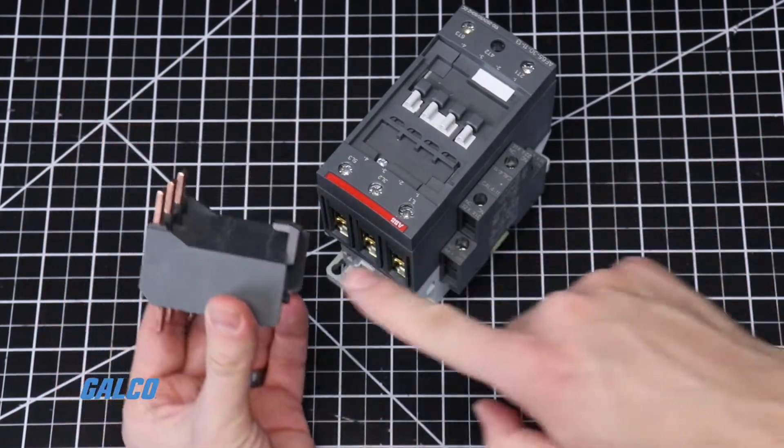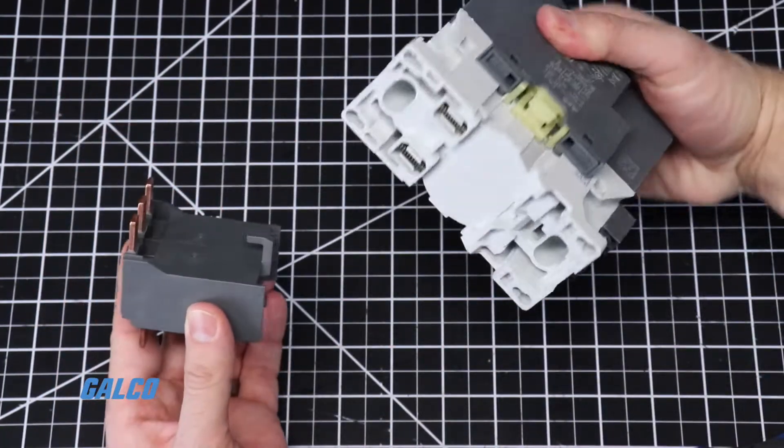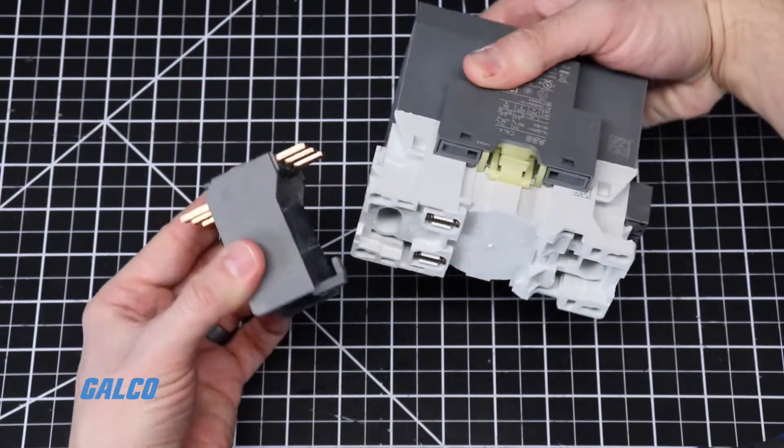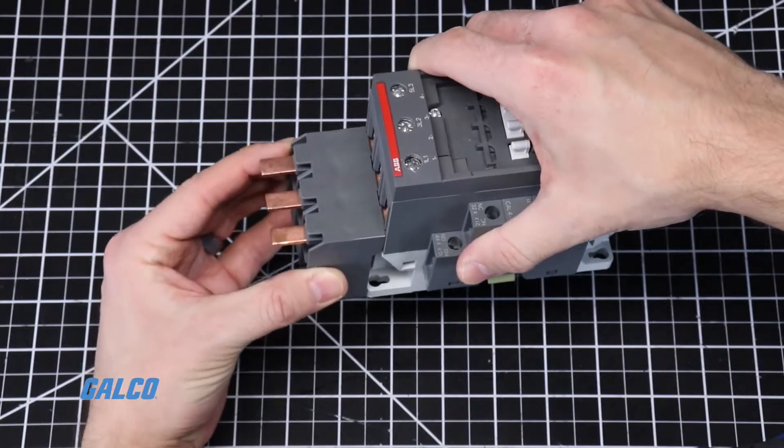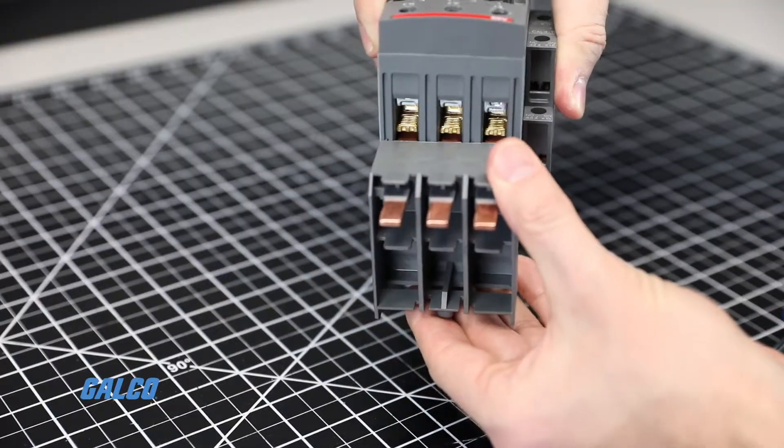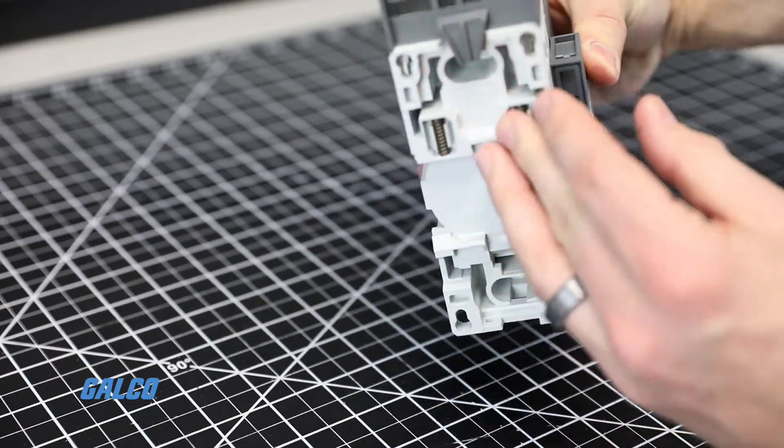Next, line up the bus bar module and insert into the terminals so that the hook side of the module fits on the back side of the contactor. The contacts should lay on the back side of the bus bar terminals.